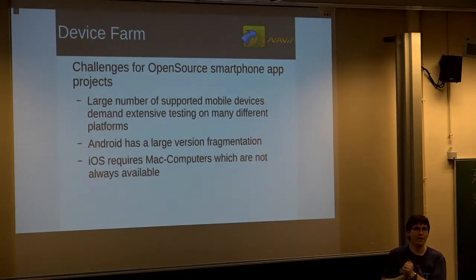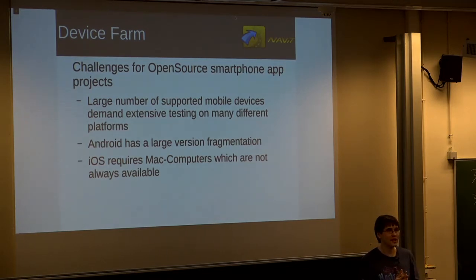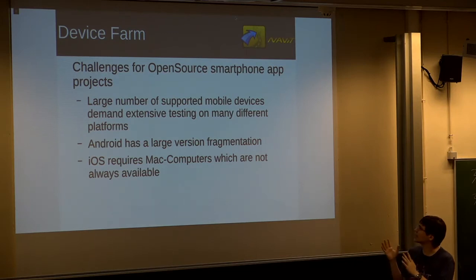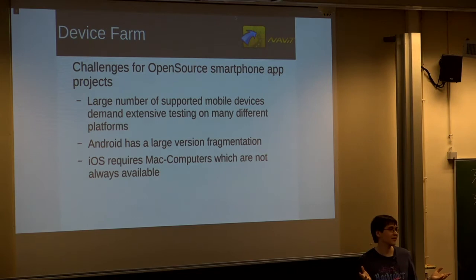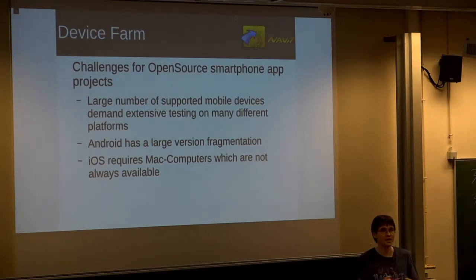Why do we do a device farm in the first place? If you make a mobile phone app, usually you have a large number of different devices the app is installed on. Android on top has the issue of fragmentation across many different Android versions. Right now we support back to Android 2.3. So you have a lot to cover and testing is not really that simple, because if you can just test locally, each developer may have some devices, but you cannot share them or use them in a more global way.